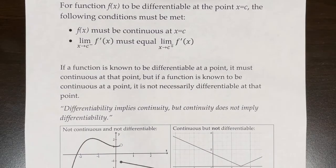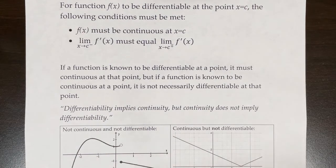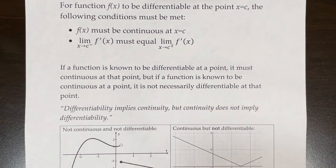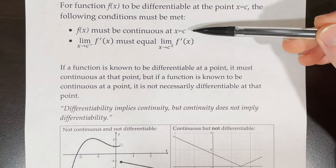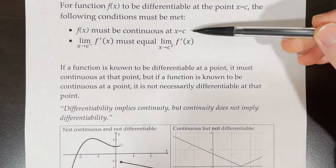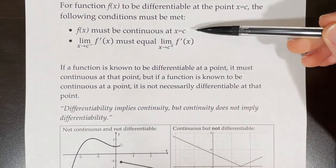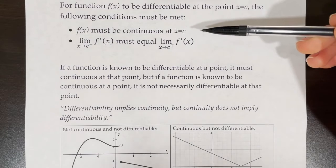For function f of x to be differentiable at the point x equals c, the following conditions must be met: f of x must be continuous at x equals c, and the limit of f prime of x as x approaches c from the left side must equal the limit of f prime of x as x approaches c from the right side. If you're not sure how to do the 3-step process for finding continuity at a point, I'd encourage you to go watch my video on that before we dive into this lesson, because this involves a lot of continuity.